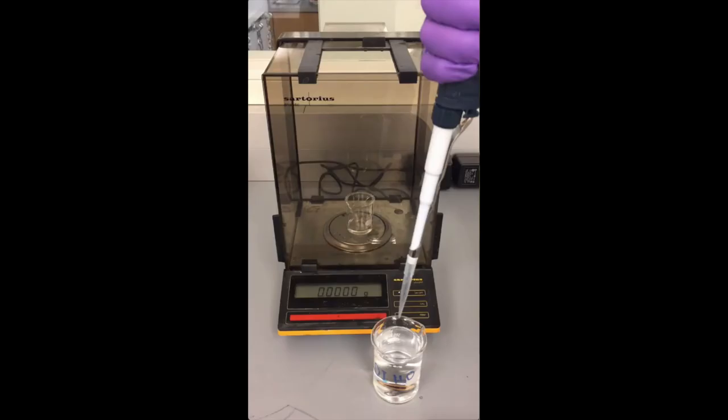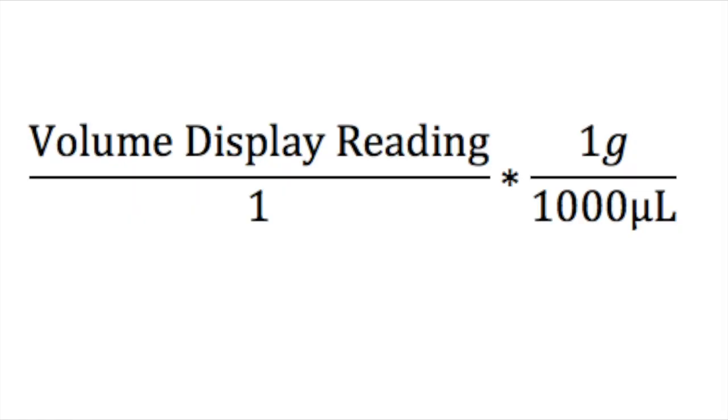In this next section, we will learn how to calibrate a micropipet. We will need a beaker with deionized water, an empty beaker, an analytical balance, and of course, your micropipet. For this next part, you will need the following conversion.